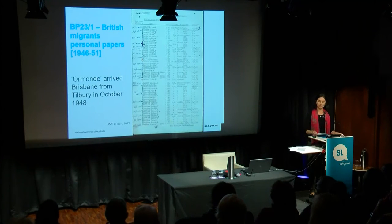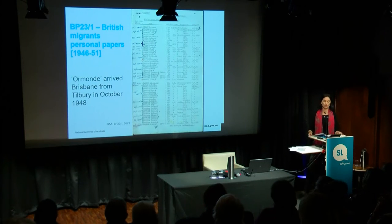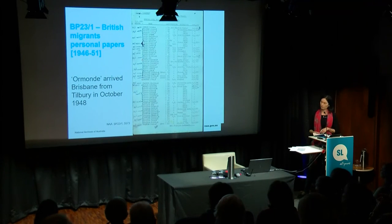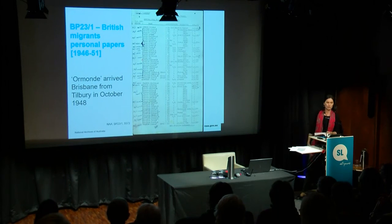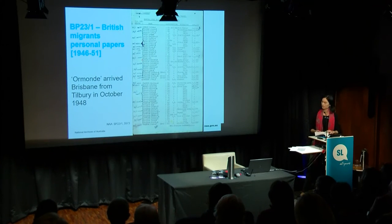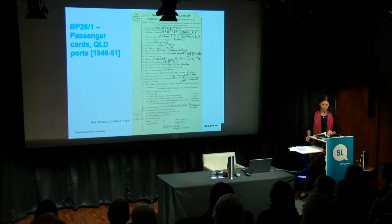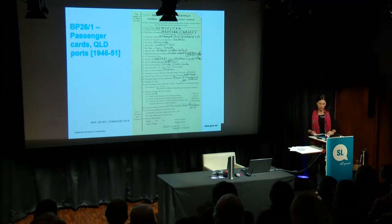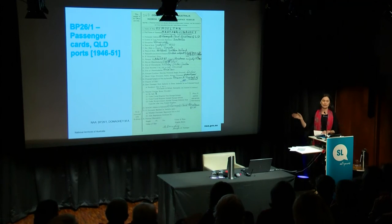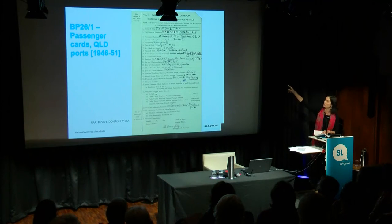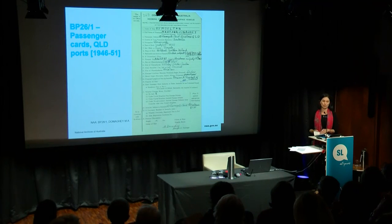BP 23-1 includes 116 passenger lists for British migrants arriving into Brisbane from 1946 to 1951. This is the nominal roll for the arrival of the Ormond into Brisbane in 1948. We know from press reports that the Thomas family shown were the largest family on the ship — I think there were about seven children. It also lists their occupations. Series BP 26-1 contains passenger arrival cards for Queensland ports, same date range of 1946 to 1951, created by the Department of Immigration. All these records are listed on the database at item level, so all you have to do is search for a person's name and these records will come up — you don't have to remember the series numbers.